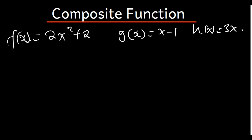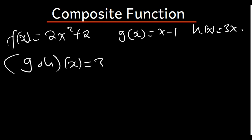Now let's say they ask us to find g of h of x. What it means is that in the function of g, where there is x, we put the function h. The function g is x - 1, and where there is x we put 3x, because 3x is the function h. So it's going to be 3x - 1.